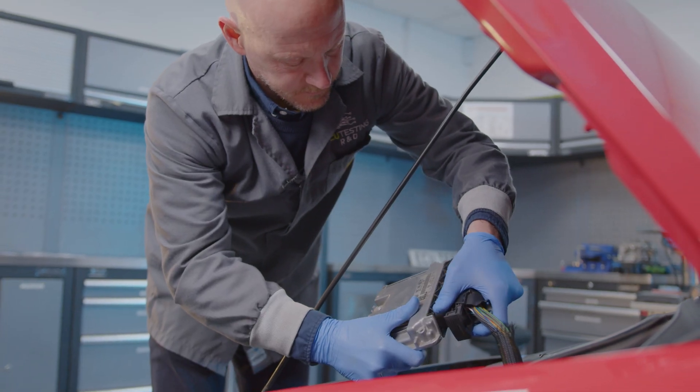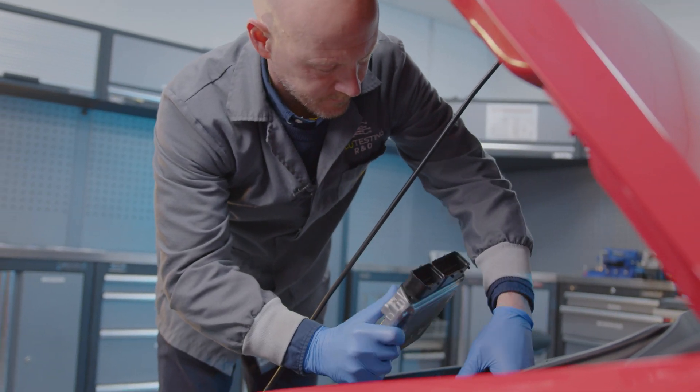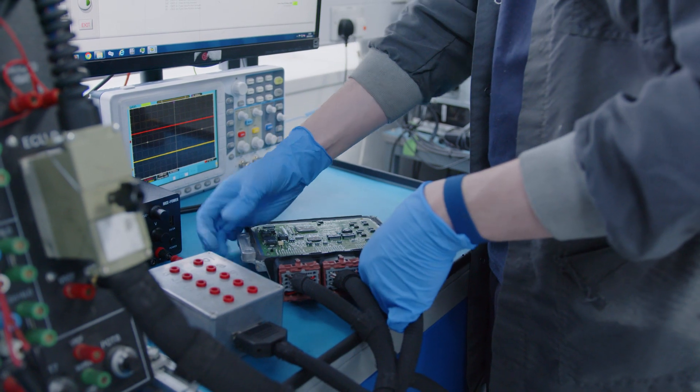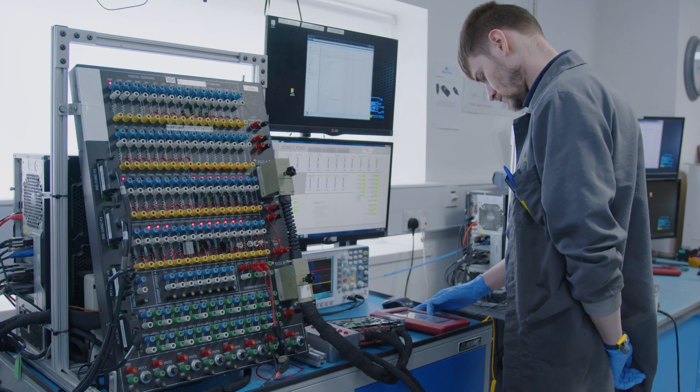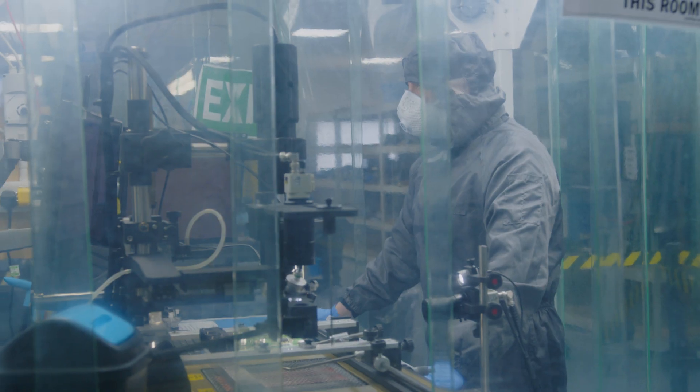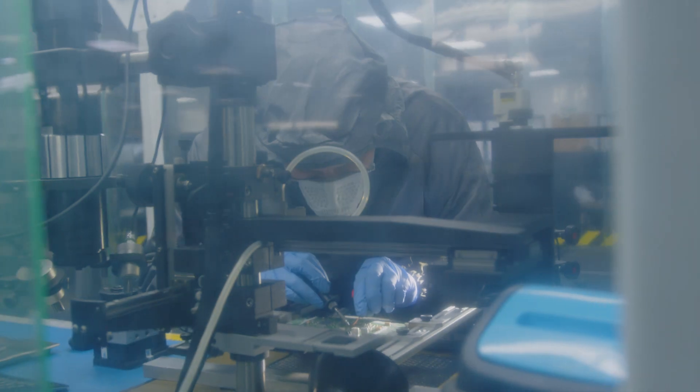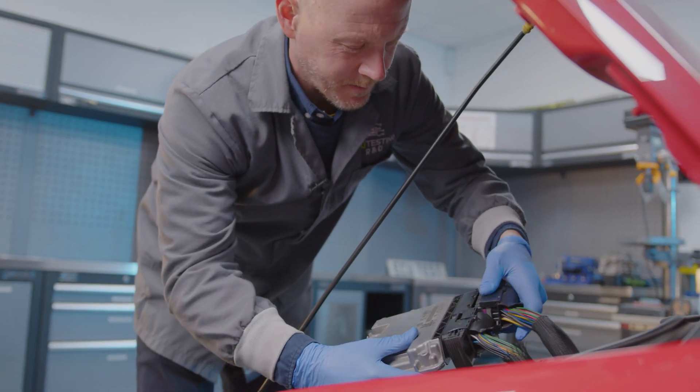If you know your loom is good and the fault lies with just your ECU, then send your unit in to us for remanufacturing. We will retest your unit and confirm the diagnosis on our hardware in the loop test rigs and then rebuild the unit whilst retaining all prior coding. All you need to do is plug it back in and off you go.